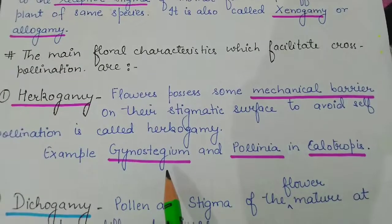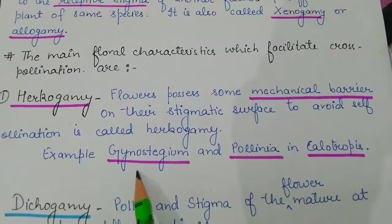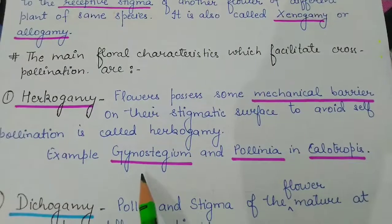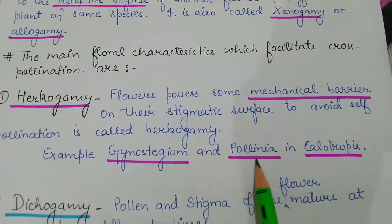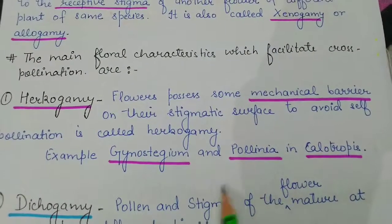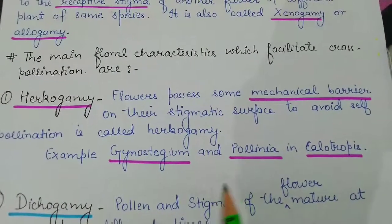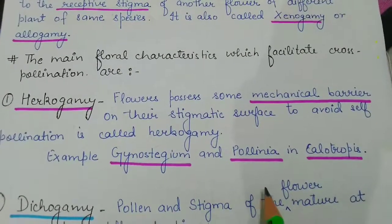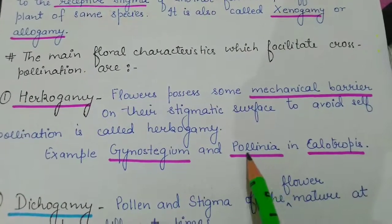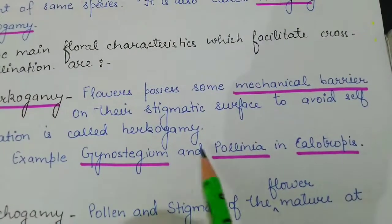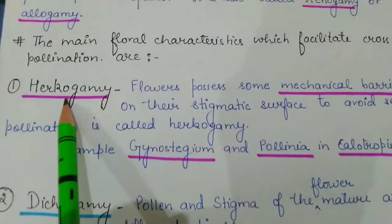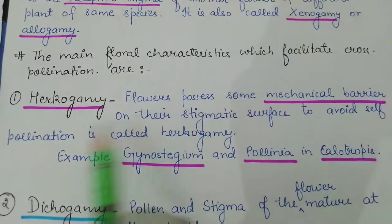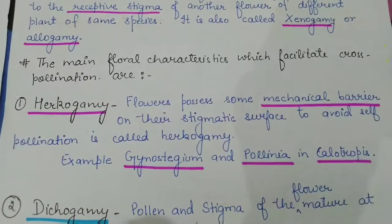In Calotropis, gynostegium involves adhesion or cohesion. Adhesion means sticking opposite parts together; cohesion means joining of similar parts. For example, style and anther are on one side of the other. Pollinia is the mass of pollen grains. So gynostegium and pollinia in Calotropis are examples of herkogamy, which avoids self-pollination.